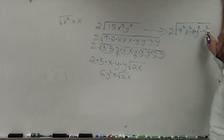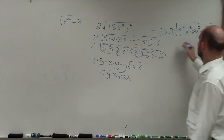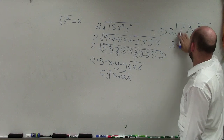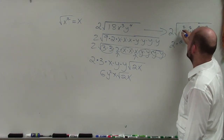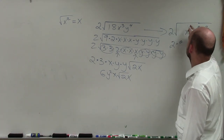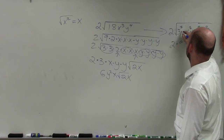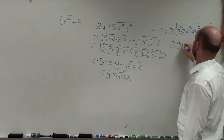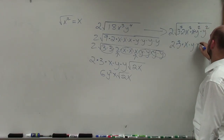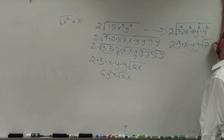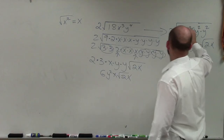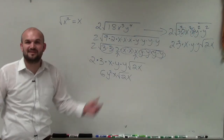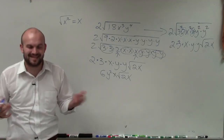Each squared term I can take the square root of. So I have 2 times — sorry, that's 3 squared times 2. Therefore I have 2 times 3 times x times y times y, times the square root of 2x which is still left over. Just another way you guys can go ahead and do it. I felt like showing two different ways for this video. Thanks.